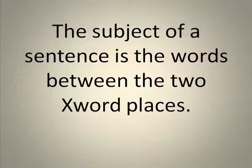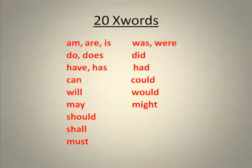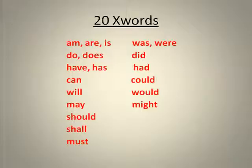The subject of a sentence is the words between the two X-word places. The first thing we need to see is what exactly are the X words — very often we call them helping verbs or auxiliary verbs. There are 20 really popular ones, and here you can see them. They're divided into two groups: some are more tied to the present, and others — like 'was,' 'were,' 'did' — have more connection to the past. But these are the 20 X words, and let's see how we can use them to help us find the subject of a sentence.